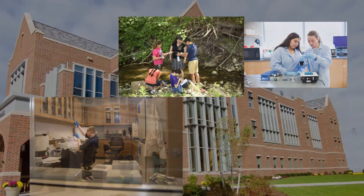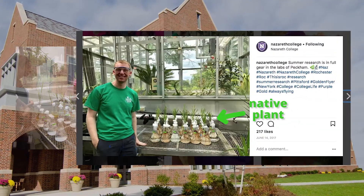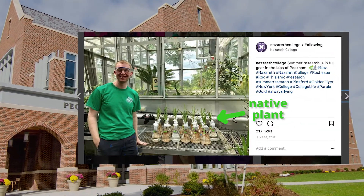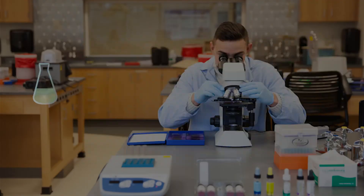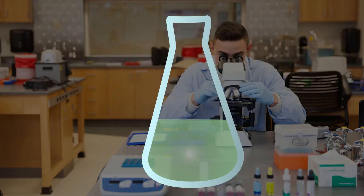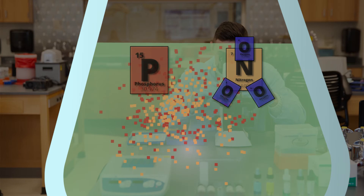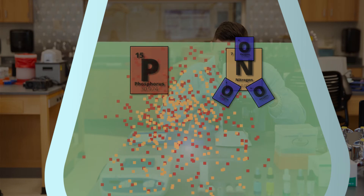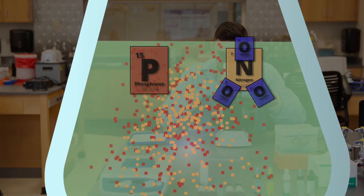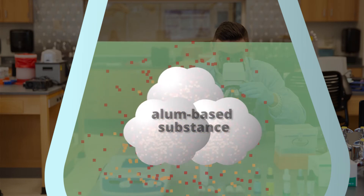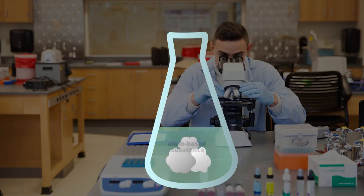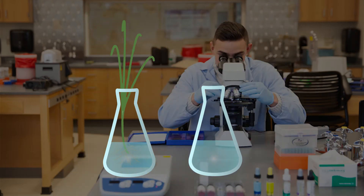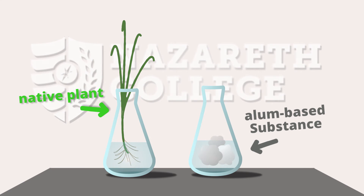At Nazareth, we are looking at a way to reduce phosphorus and nitrate specifically. We're using a native plant to the area and an alum-based substance. That sounds really technical, but it's just a way to bind the phosphorus and nitrate so that we can take it out of the water — it stays bound to this alum substance and then we can remove it, which will therefore reduce the amount of algae.